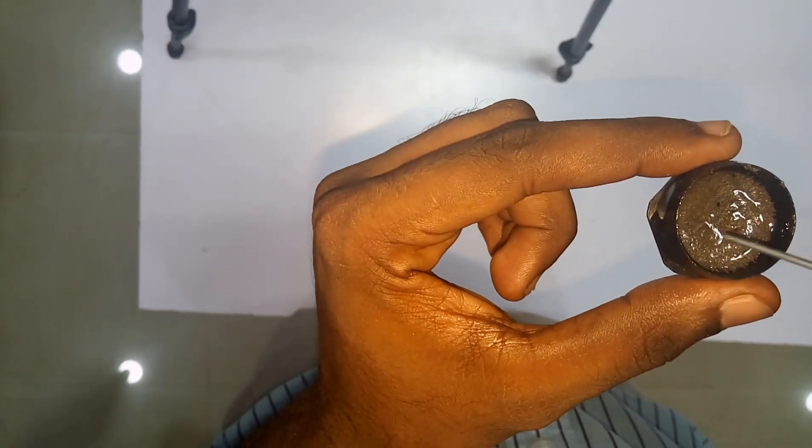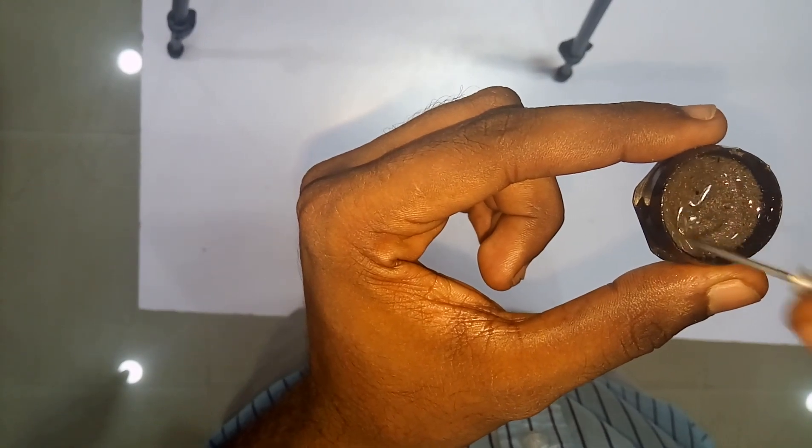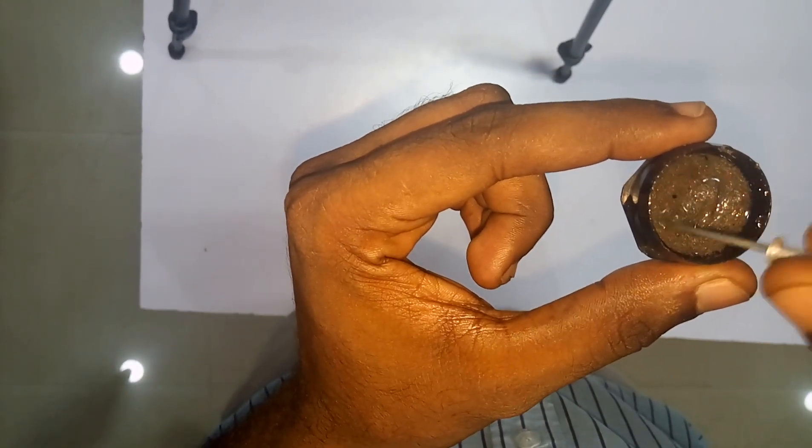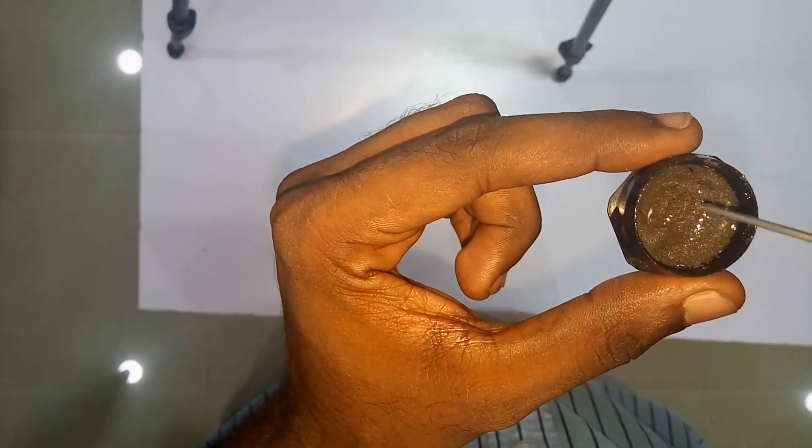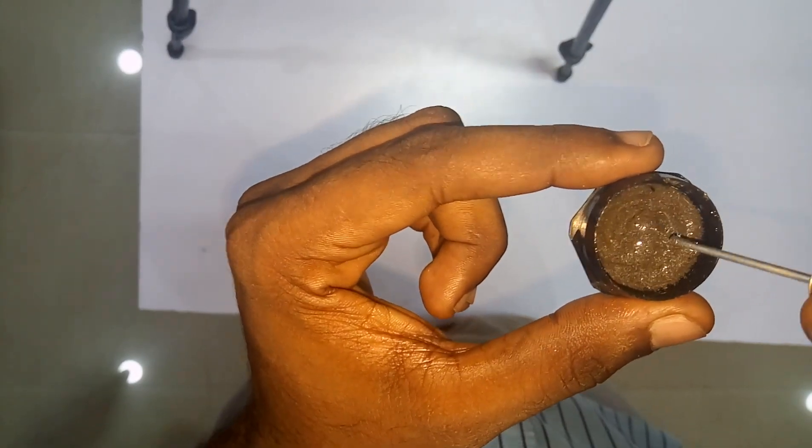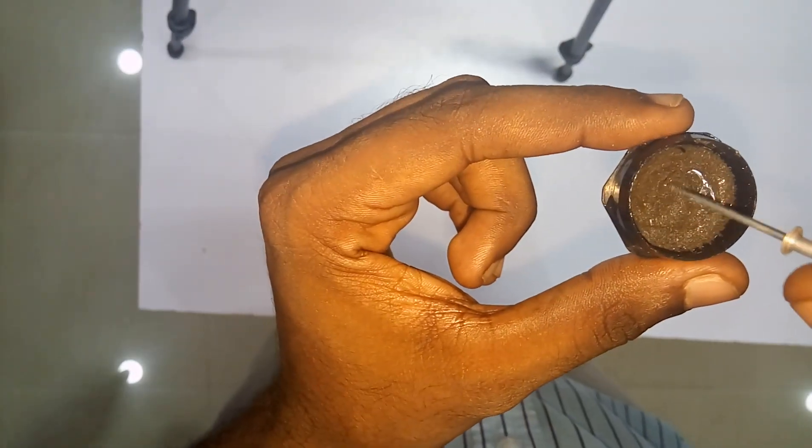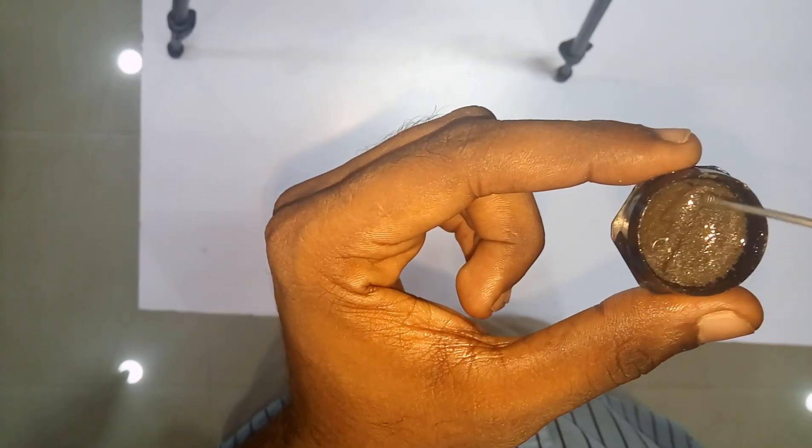Hi, this is the magnetorheological fluid that I made at home using iron filings immersed in oil. As you can see now, it is completely in a liquid state.